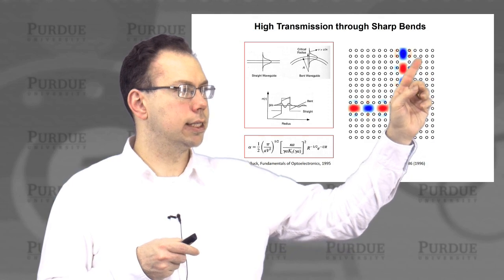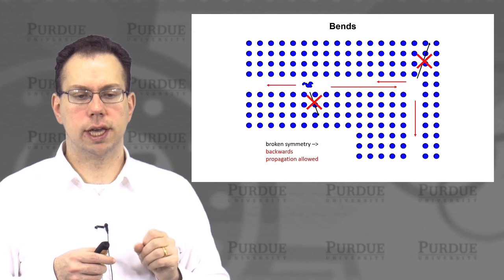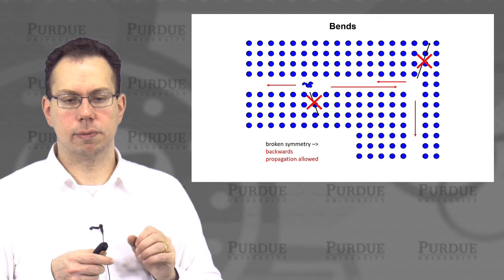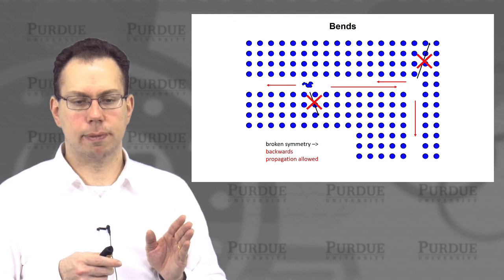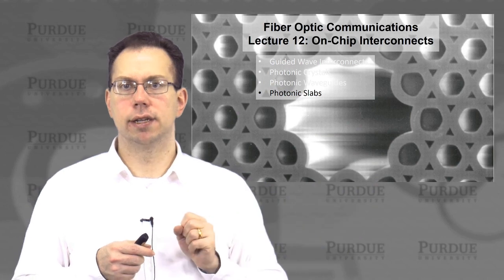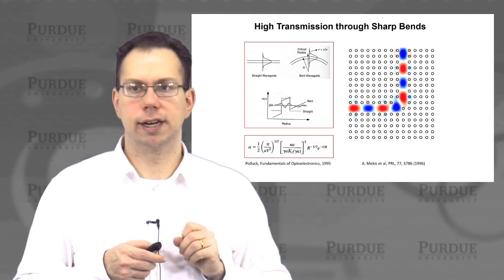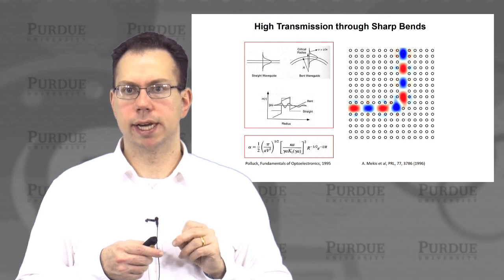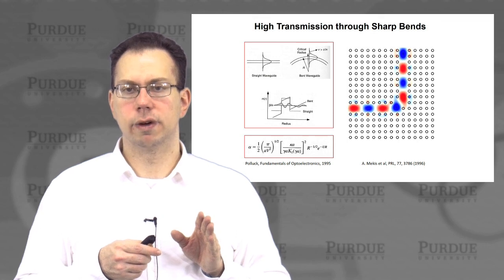With the outgoing waveguide, a completely non-optimized bend design would potentially produce backscattering right at the corner. But if you optimize it, that doesn't have to happen. This paper showed you can get over 99% transmission around a sharp bend, which is really important because it allows you to miniaturize all these optical interconnects down to the wavelength scale.